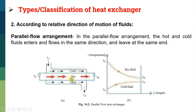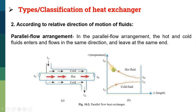In this heat exchanger both hot and cold fluids are moving from left to right. TH1 is the inlet temperature of the hot fluid and TH2 is the outlet temperature of the hot fluid. TC1 is the inlet temperature of the cold fluid and TC2 is the outlet temperature of the cold fluid. The graph is plotted as temperature versus length of the heat exchanger. We can see the hot fluid is losing heat so its temperature is decreasing, and in the same direction the temperature of the cold fluid is increasing. This is known as a parallel flow heat exchanger.